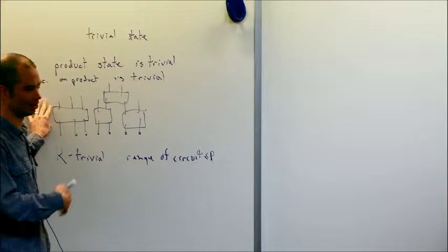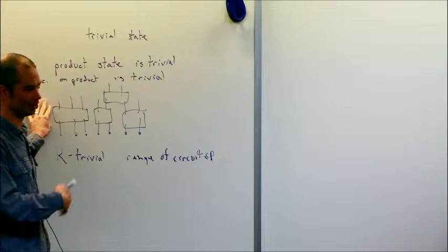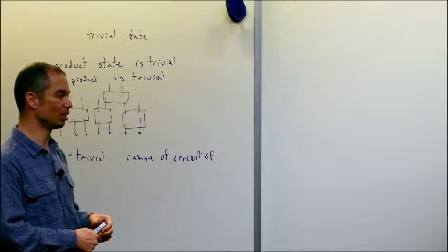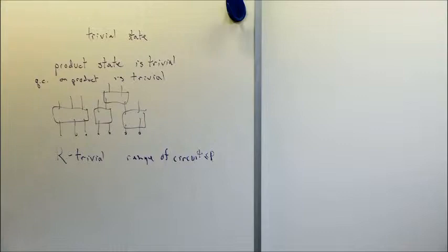Anything we obtain by continuous time evolution we can obtain up to small error with one of these quantum circuits. The range would be related to the Lieb-Robinson velocity times the time. This is just a measure of how far correlations can have spread — up to this range or twice this range.